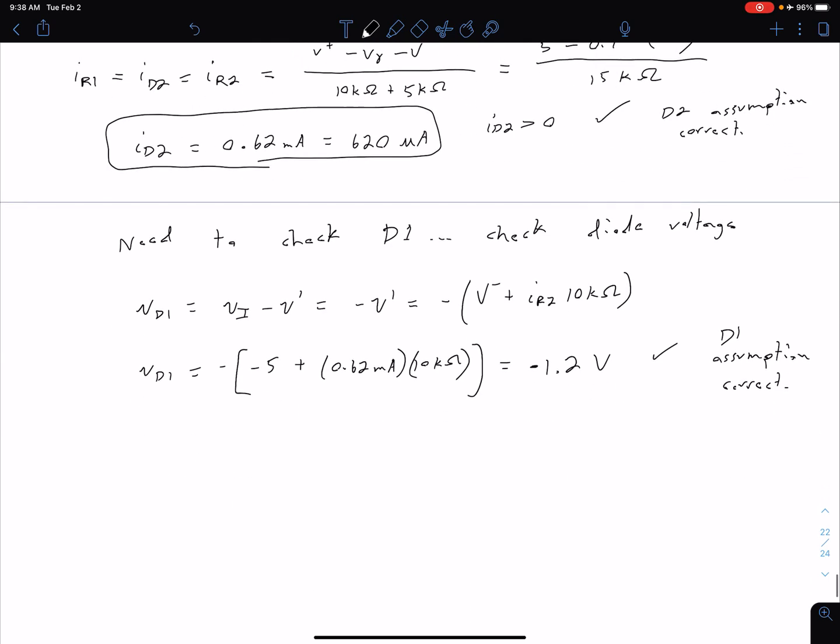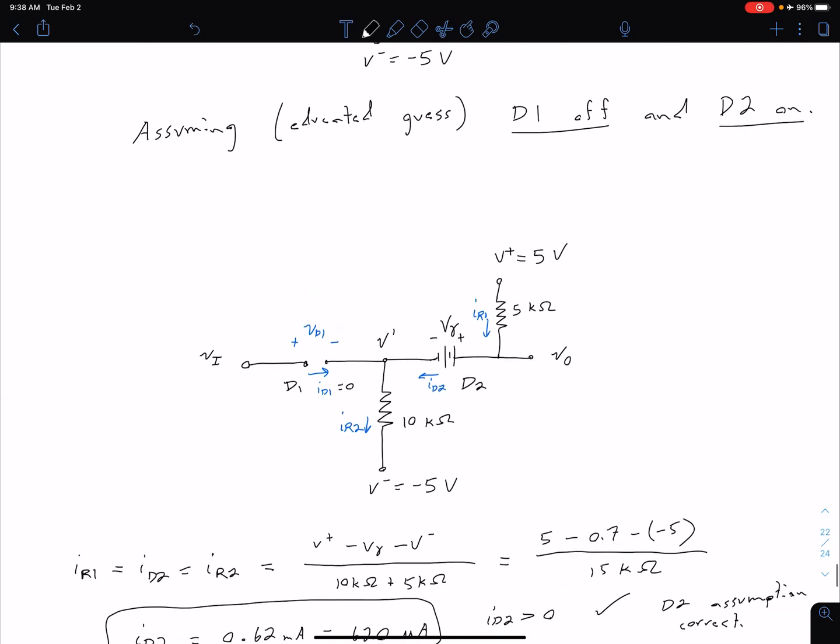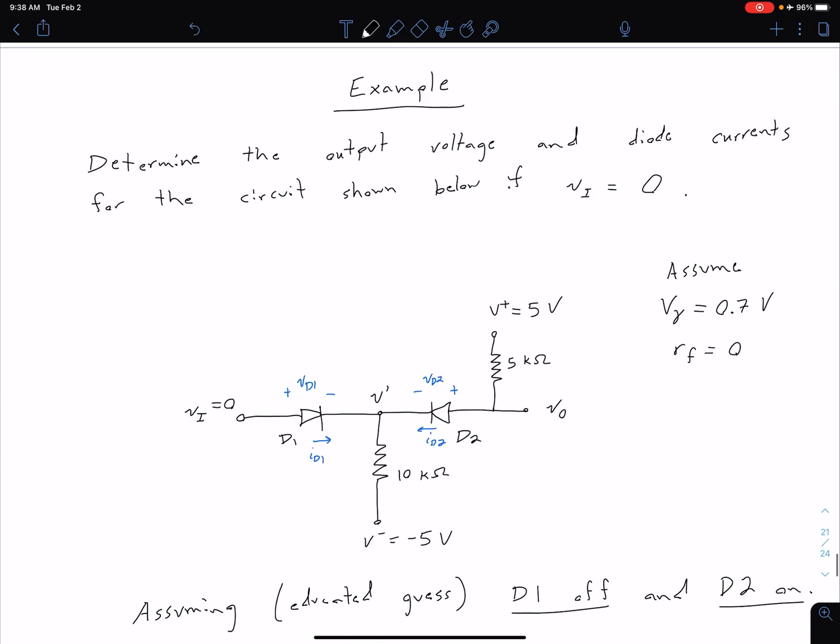So that would be the second part of, or one of the other things that was asked for, our diode currents. So now we have our diode current I_D2 is 620 microamps, our diode current I_D1 is 0. The last thing we want to find is our output voltage.